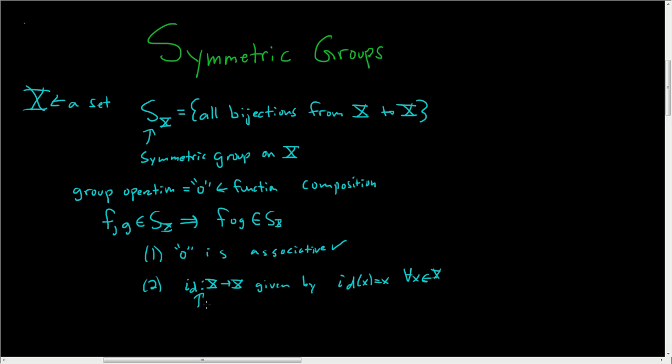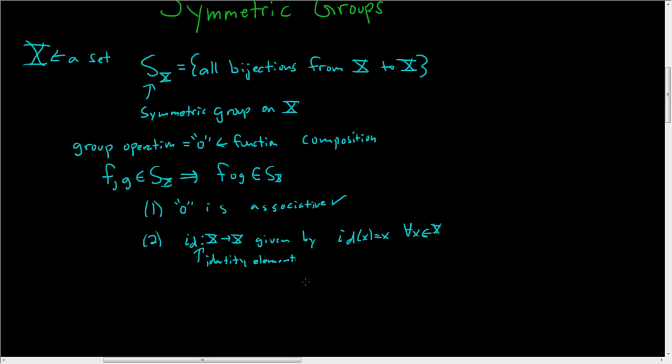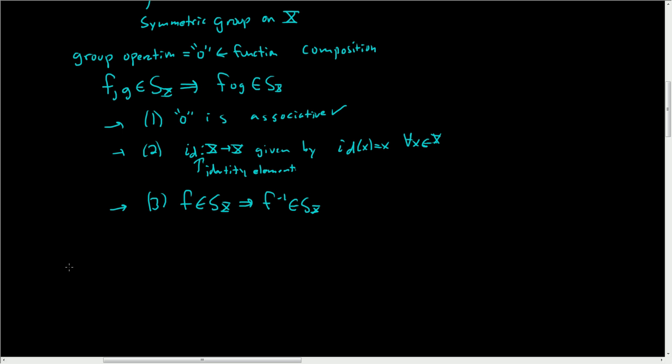This is the map that fixes X for all X in big X. What about inverses? If you take a map that's a bijection, then the inverse of that map is also a bijection, so it's also in this set. We do have a group—all three conditions are satisfied.